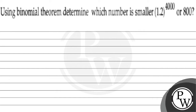Hello Bachchan, let's read the question. The question says: using the Binomial Theorem, determine which number is smaller — 1.2 raised to the power 4000, or 800.